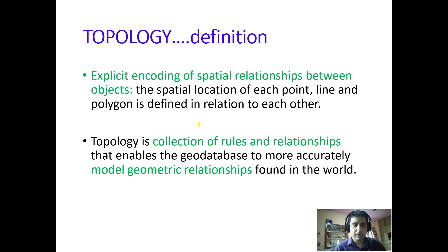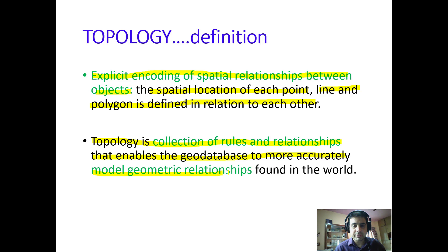Welcome back. Now we will study about topology and overlay analysis. Topology gives us the relationship between spatial features like point, line, and polygon. By definition, it is the explicit encoding of spatial relationships between objects — meaning the spatial location of each point, line, and polygon is defined in relation to each other. Topology can also be defined as the collection of rules and relationships that enables the geodatabase to more accurately model geometric relationships found in the world.